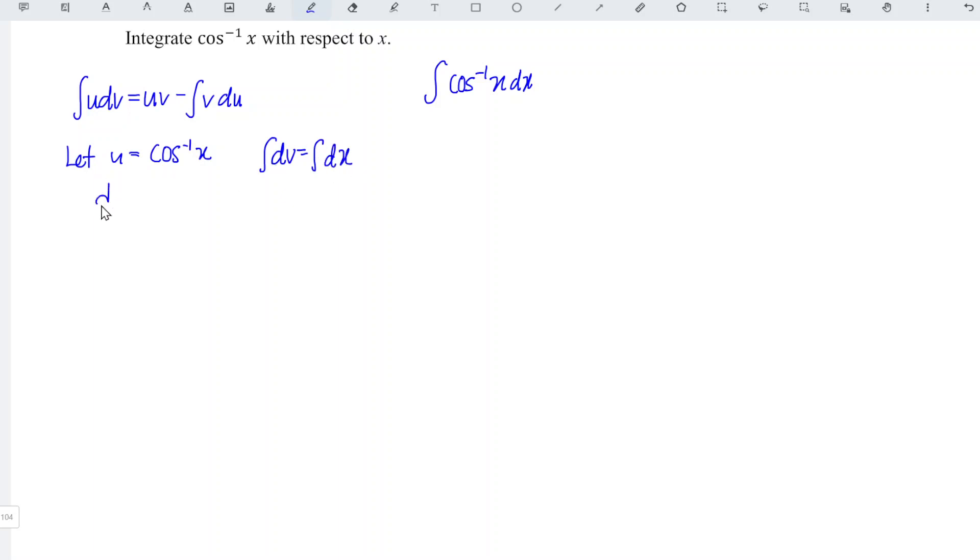When we differentiate u with respect to x, we obtain negative 1 over square root of 1 minus x square dx. Integrate and differentiate cancel each other, left only v. And so for the right-hand side, left only x.